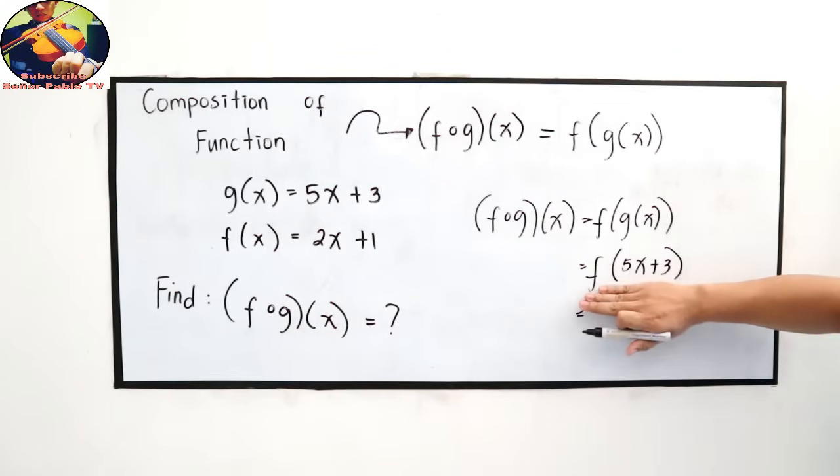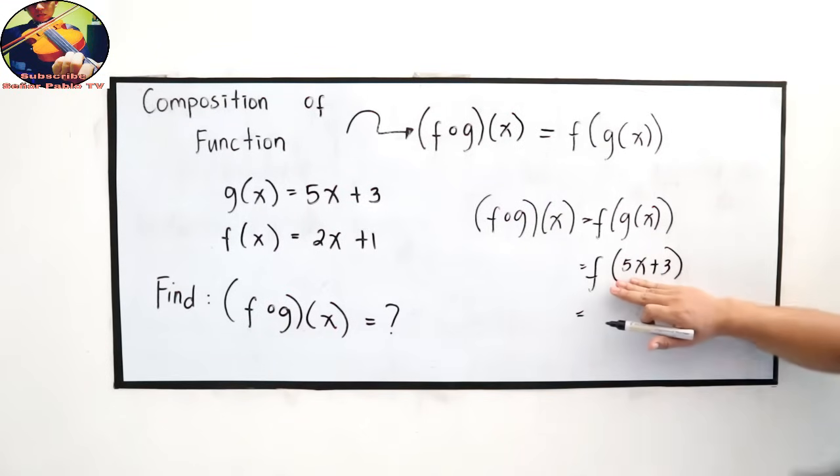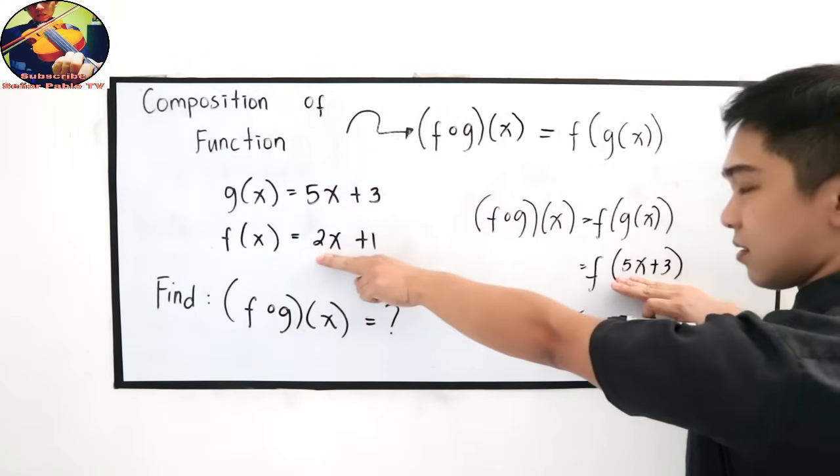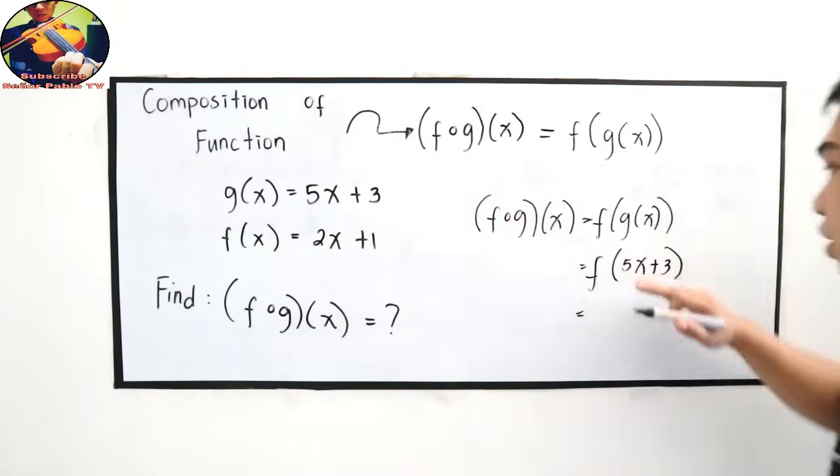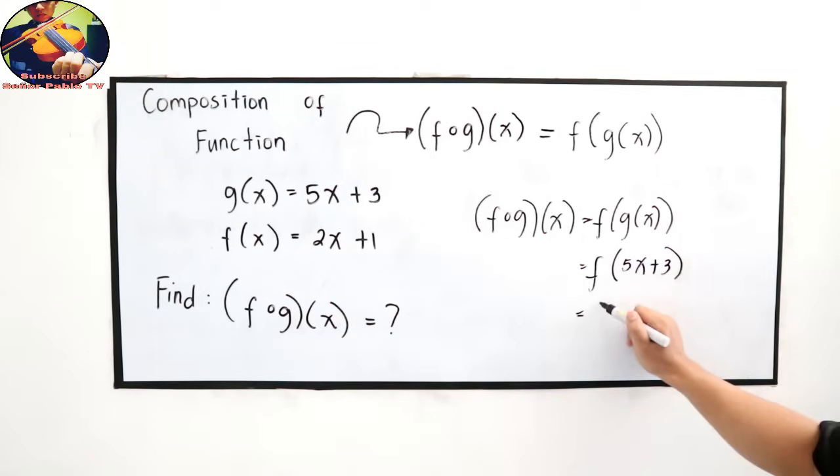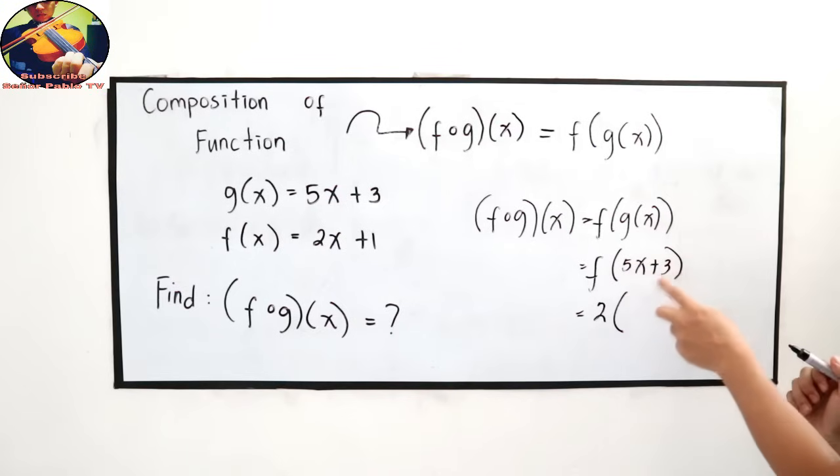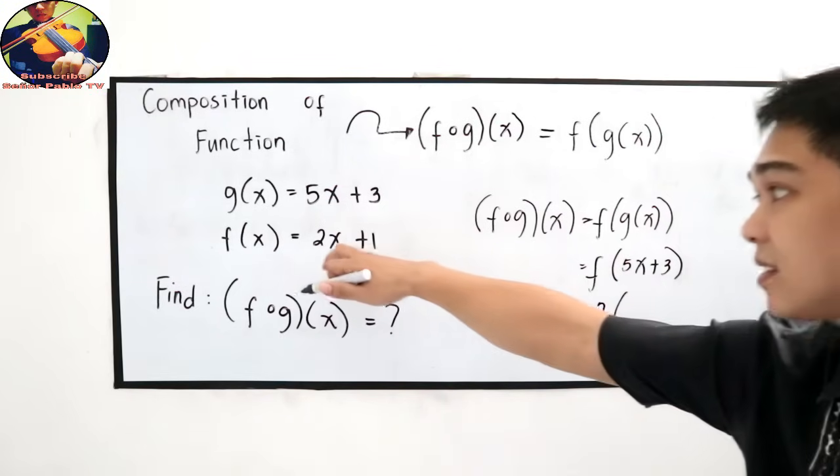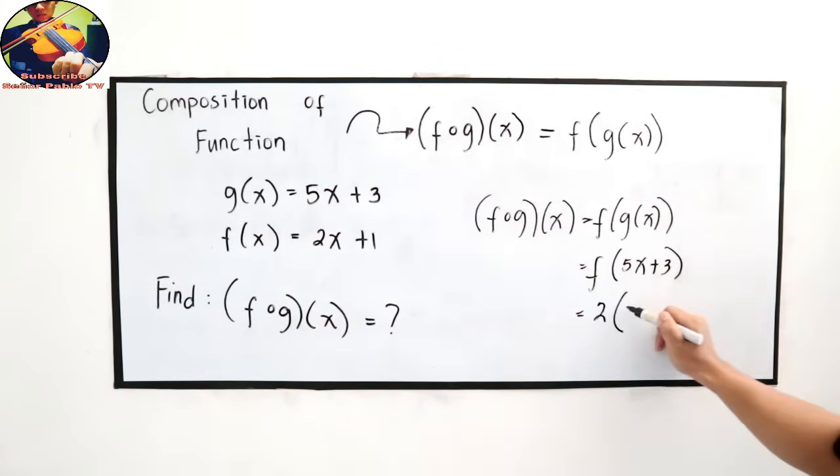Next, we have f of 5x plus 3. Now, that 5x plus 3, we substitute it into the value of f of x. So we have 2 times, our x is 5x plus 3, so let's replace x with 5x plus 3.